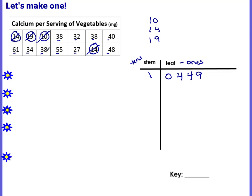Let's find our next stem. Do we have any twos? We do — we only have one. So the stem is going to be the two and there will only be one leaf, which is a seven. So I'm going to cross that off. Now I'm ready to look for my stems of threes. I have a thirty-eight, a thirty-two, a thirty-eight, a thirty-four, and a thirty-eight.